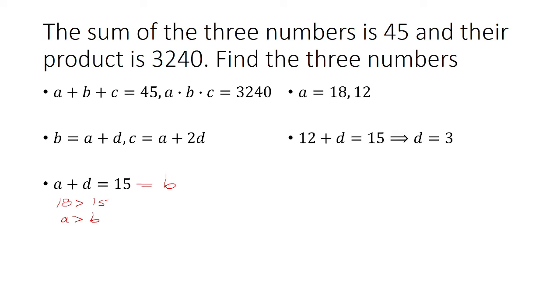Now if A is 12, D has to be 3. So then we go over here, A is 12, we said B is 15, so C has to be 18. And so those are my three consecutive terms.